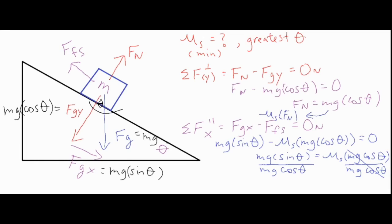Okay, and then one interesting thing is going to happen to simplify our answer a lot. Our mgs are going to drop out, and then since we have sine theta over cosine of theta, that is just equal to the tangent of theta. So the tangent of theta equals the coefficient of static friction.